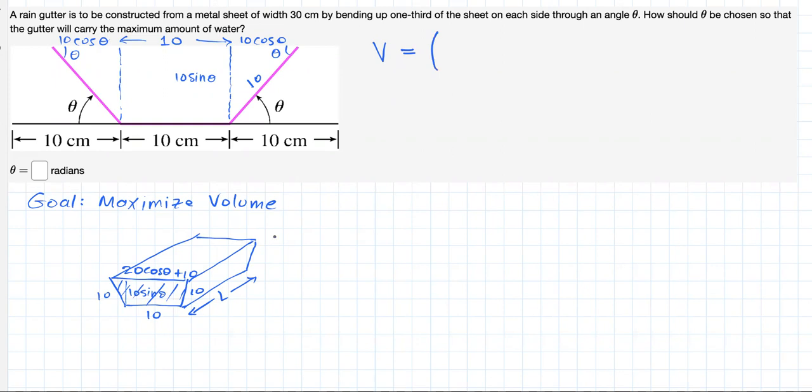The average of the bases: 20 cosine of theta plus 10 here, plus the other base 10, divided by 2, times the height 10 sine of theta, and all that multiplied by L.